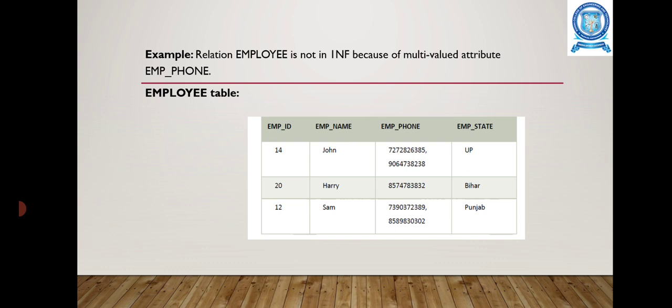For example, the relation employee is not in 1st Normal Form. In this employee table, employee John has multiple mobile numbers, so this is not in 1st Normal Form. We can convert it into 1st Normal Form by splitting the particular row into multiple rows.